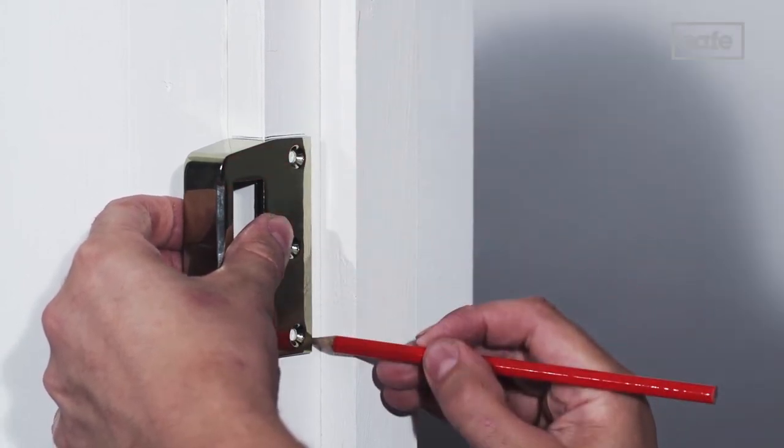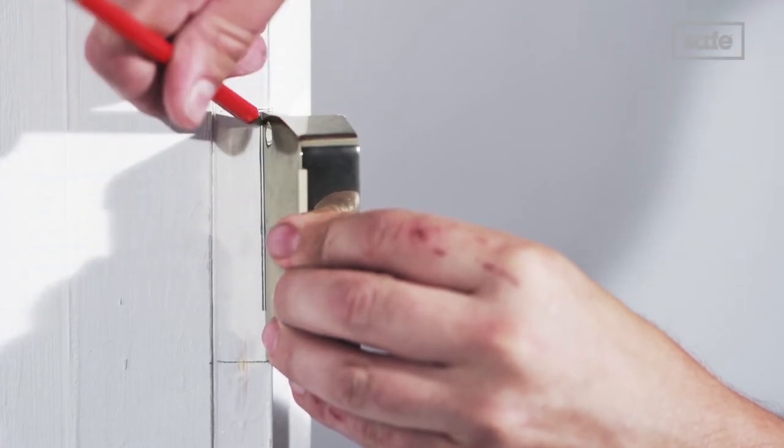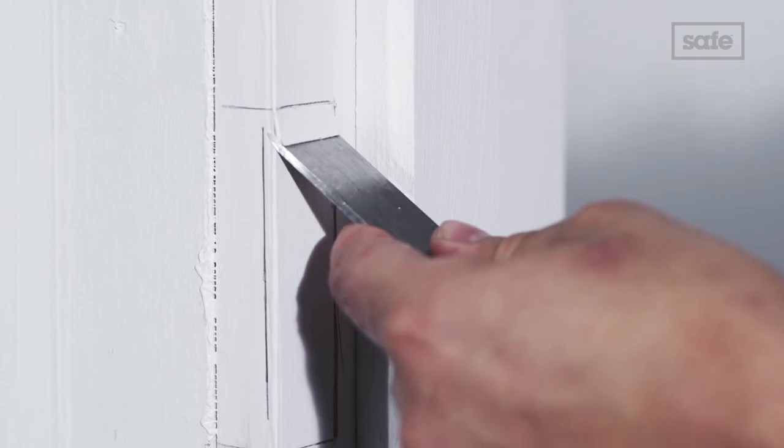Draw around the staple on the door frame. Then use these markings to chisel out a recess on the door frame.